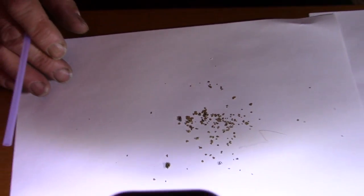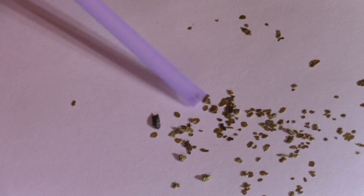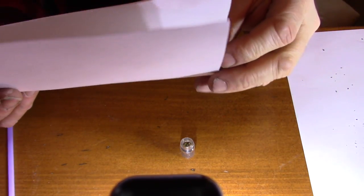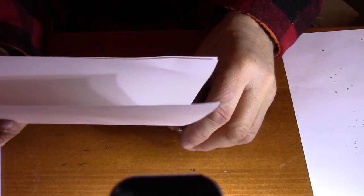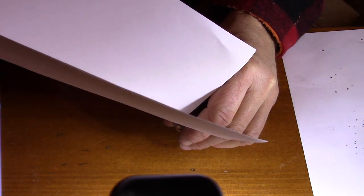And what I have left here is pretty clean gold. Now all I do is fold my sheet and pour my gold into my vial.